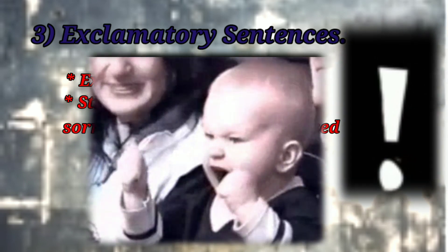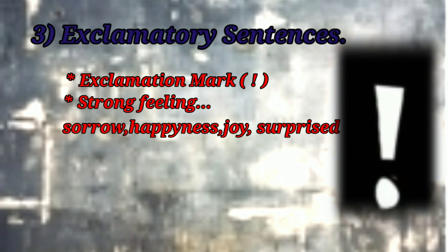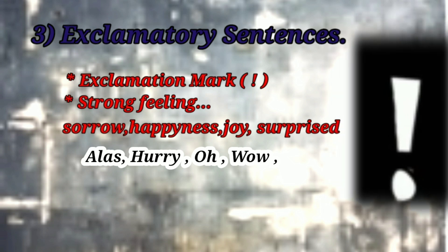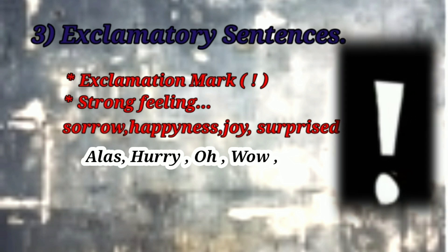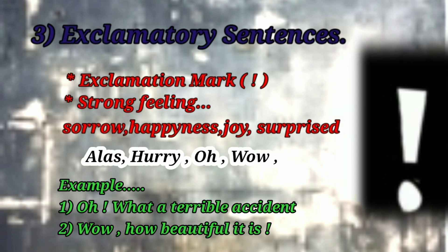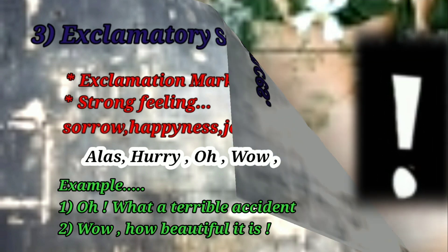The third type is exclamatory sentence, which is also very easy to identify. First, it will have an exclamation mark. Second, in exclamatory sentences, a very strong feeling is expressed — such as sorrow, happiness, joy, something amazing or wonderful. Certain words are used like 'alas' (which stands for sadness), 'hooray' (which stands for happiness), 'oh', 'wow'. Examples: 'Oh what a terrible accident!' 'Wow, how beautiful it is!' etc.